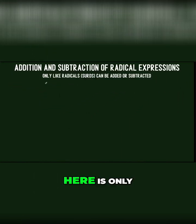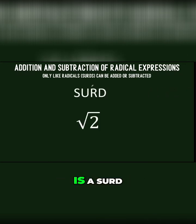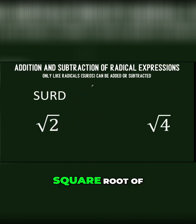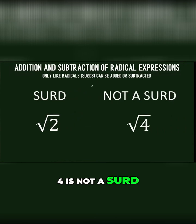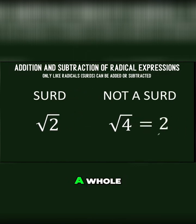The main concept here is only like radicals or surds can be added or subtracted. So let's talk about surds first. What are surds? Square root of 2 is a surd, whereas square root of 4 is not a surd. What's the difference between the two? The square root of 4 is equal to a whole number 2, and 2 is a rational number.